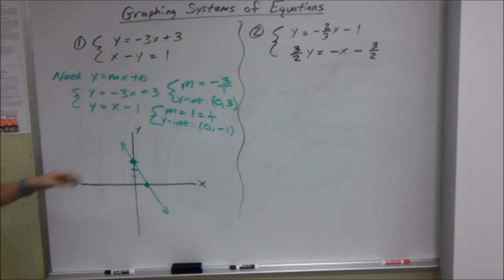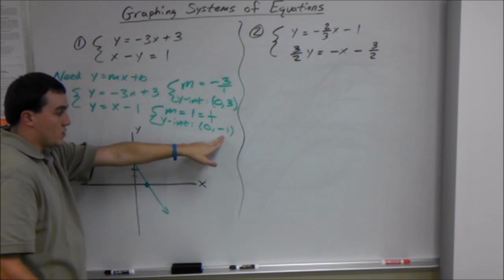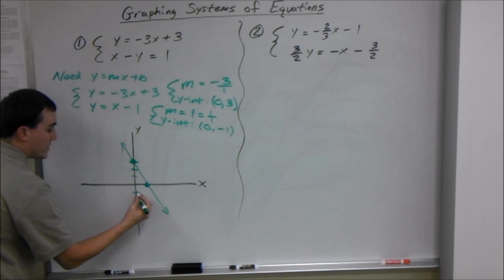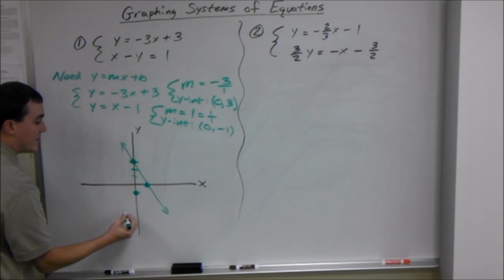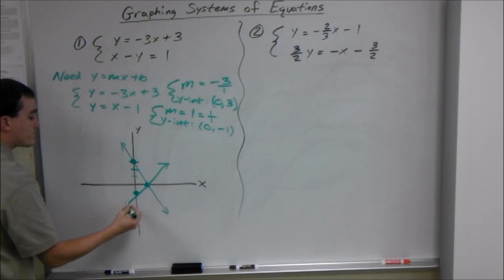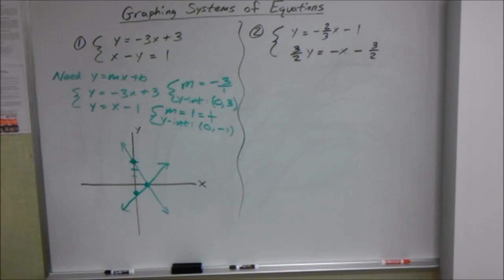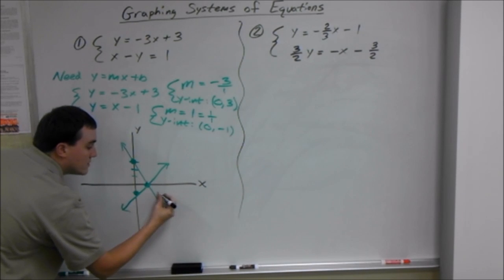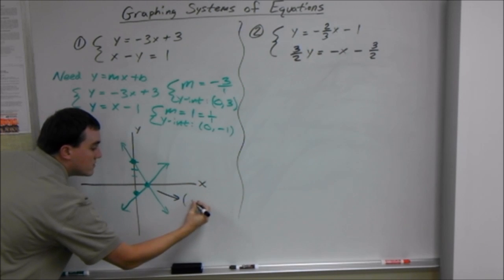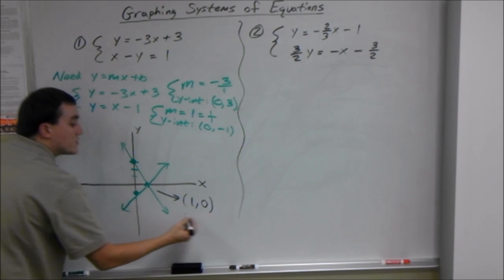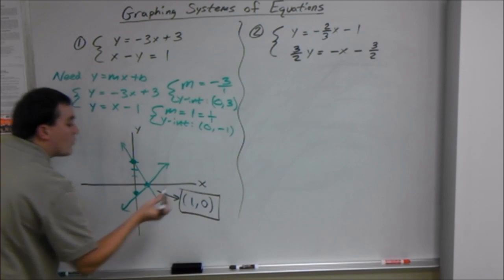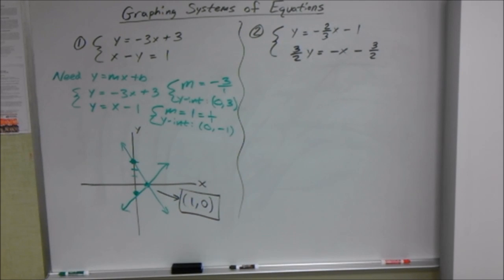Second line has a y-intercept of 0, negative 1, which is right here, and a slope of positive 1, over 1. So we go up 1, over 1. And it happened to hit right there, which is what we're looking for. So, we need to state that point. It's just x comma y. So our point here is over 1, up 0. So the solution to this system is 1 comma 0. All we're trying to find out is where they hit.